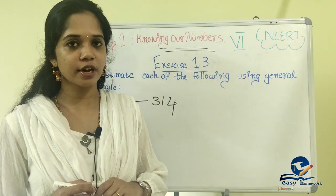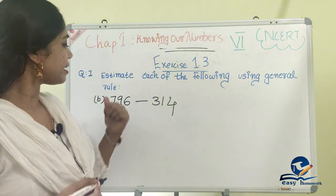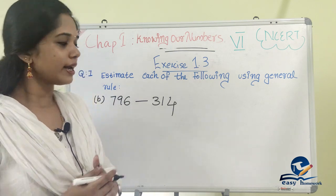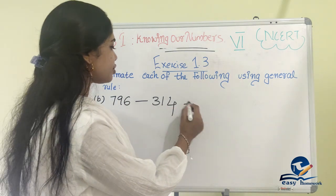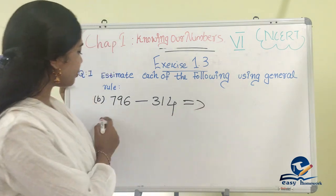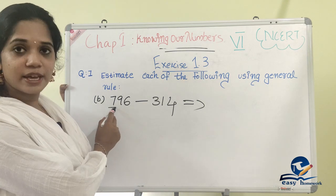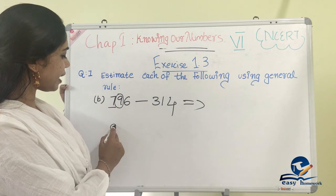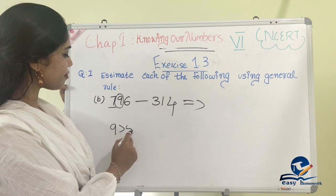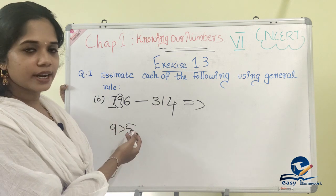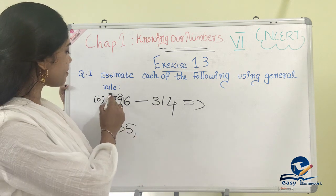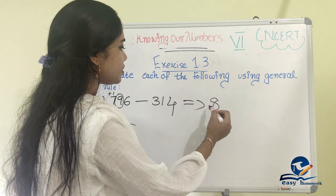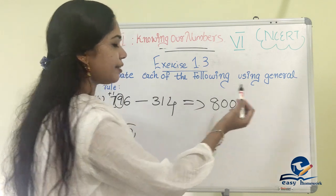Now we will go to the second question. The second question is 796 minus 314. In the 100 place, 7 is there. In the tens position, 9 is there. We compare 9 with 5 — 9 is greater than 5. So we add 1 to 7, making it 8. So 796 rounds to 800.